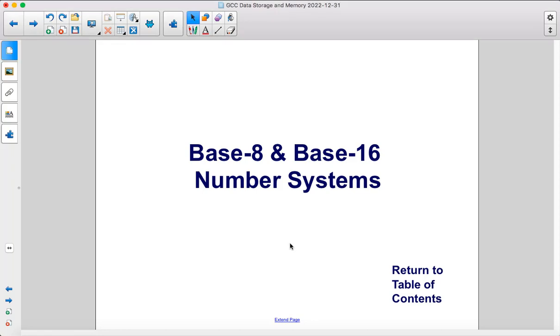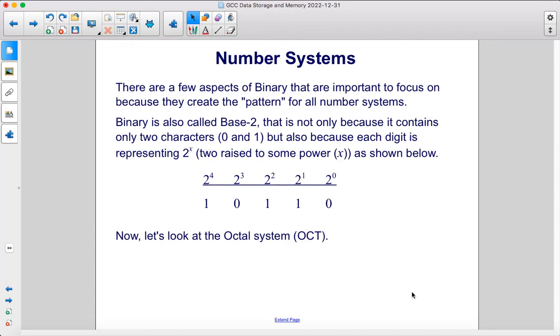Base 8 and Base 16 number systems. There are a few aspects of binary that are important to focus on because they create the pattern for all number systems. Binary is also called Base 2. That is not only because it contains only two characters, 0 and 1, but also because each digit is representing 2 to the x power, as shown below.